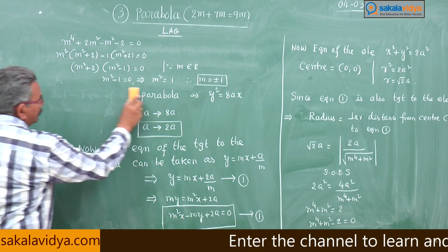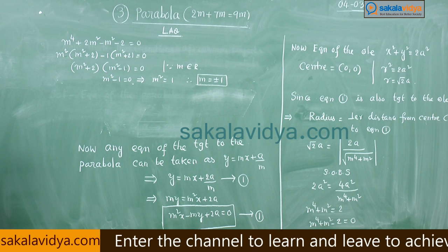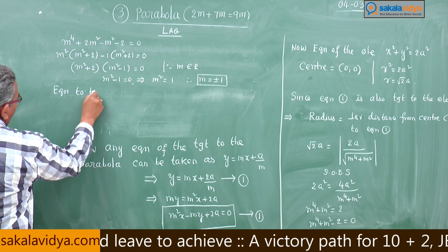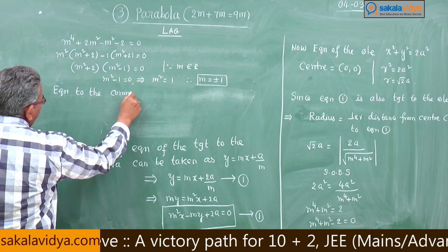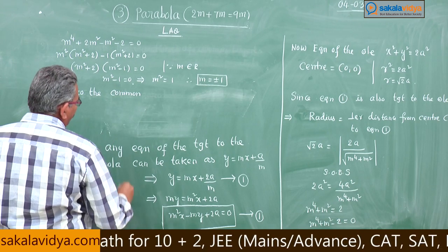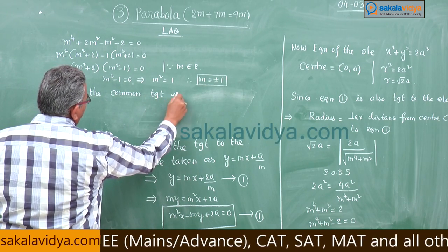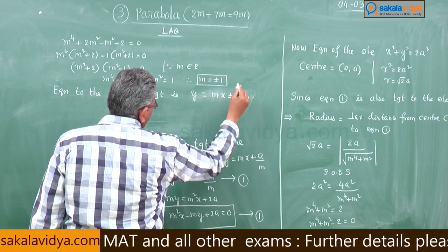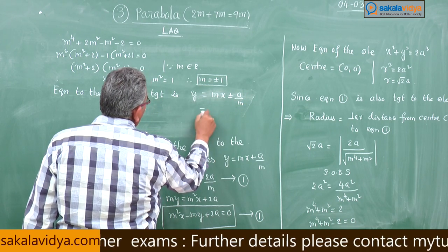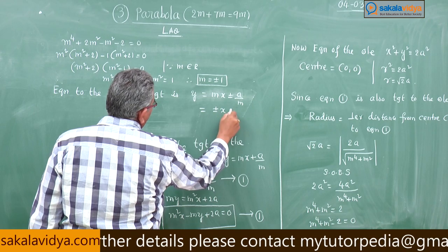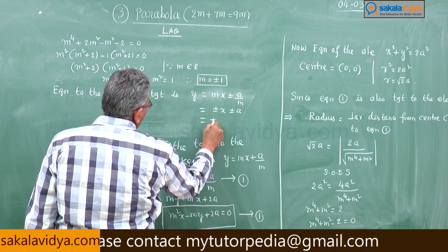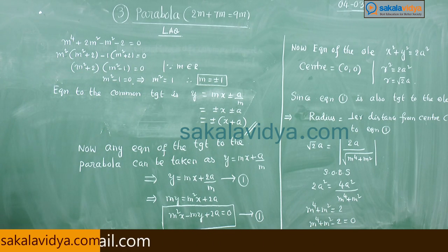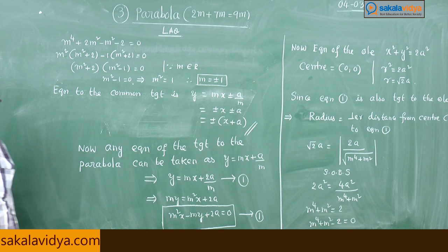The equation of the common tangent is y = mx + 2a/m. Substituting m = ±1, we get y = ±x + 2a/±1 = ±x ± 2a. Taking ±1 common: y = ±(x + a). Hence the equations of the common tangents are y = ±x ± 2a, as required.